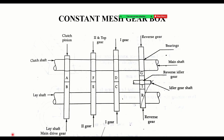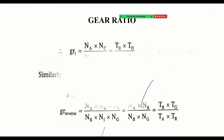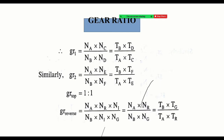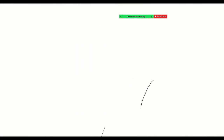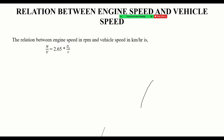Now we look at the constant mesh gearbox. In a constant mesh gearbox, all the gears are always in mesh with each other. This is what distinguishes it from a sliding mesh gearbox.